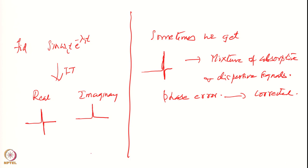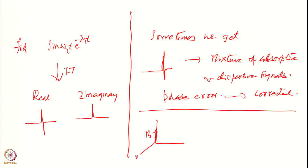What is the source of phase error? Suppose I have an experiment done like this: I have the initial magnetization M₀ here. If I apply a 90 degree pulse along the x-axis which is exactly correct - 90x - then the magnetization will come along the y-axis. If it comes exactly along the y-axis, then my signal will be cosine(ω_i · t) · e^(−λ_i · t), collected starting from the magnetization aligned exactly along the y-axis.